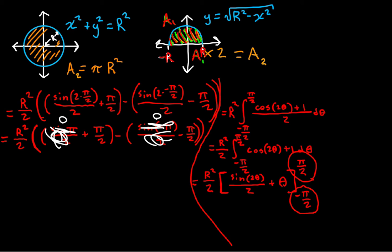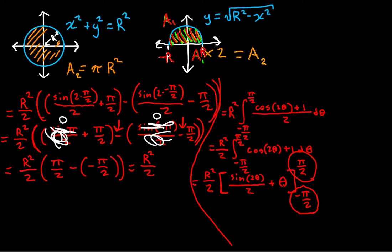All of a sudden things are getting really obvious. We have r squared over 2 times pi over 2, minus negative pi over 2. Subtracting negative pi over 2 is the same as adding pi over 2, so we get r squared over 2 times pi. That's pi r squared over 2. We are looking for an answer of pi r squared — not pi r squared over 2.